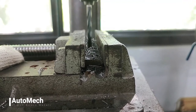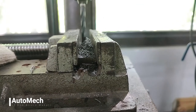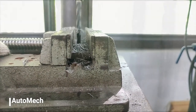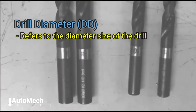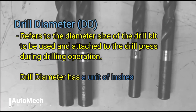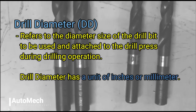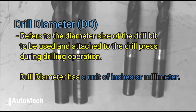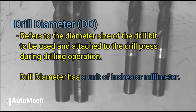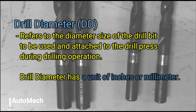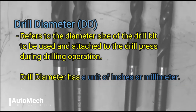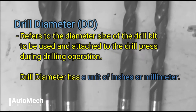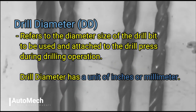There are three main factors that are needed to be considered during drilling operation. First is the drill diameter, or DD. This refers to the diameter size of the drill bit to be used and attached to the drill press during drilling operation. Drill diameter has a unit of inches or millimeters.